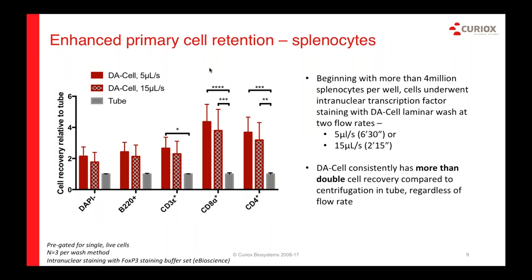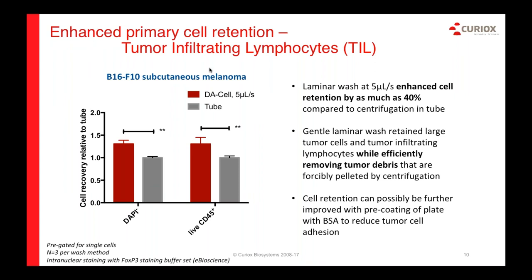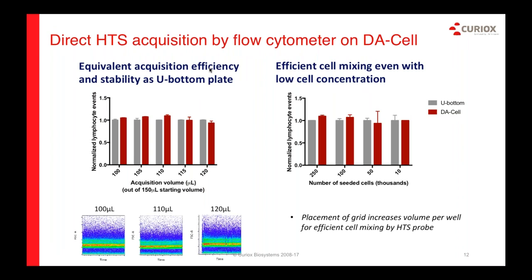The next couple of examples show optimized DA cell methods — every time we work with a customer, we optimize for their particular protocols. Here I show how the method can retain more cells, particularly cells from tissue samples. The flow rate of dispensing and aspiration can be adjusted to optimize. We show enhanced cell retention during FOXP3 staining of splenocytes — this chart is a relative comparison to the tube method. The DA cell colored bars show better retention at both flow rates. The following slide also shows enhanced retention of TILs — tumor infiltrating lymphocytes — again relative to the tube method.